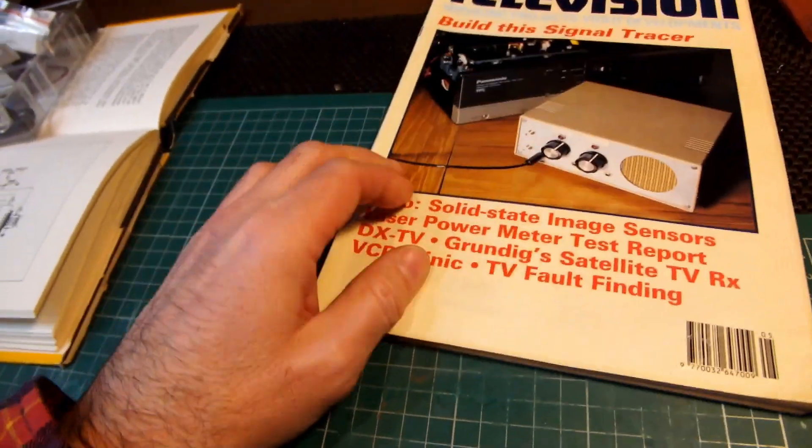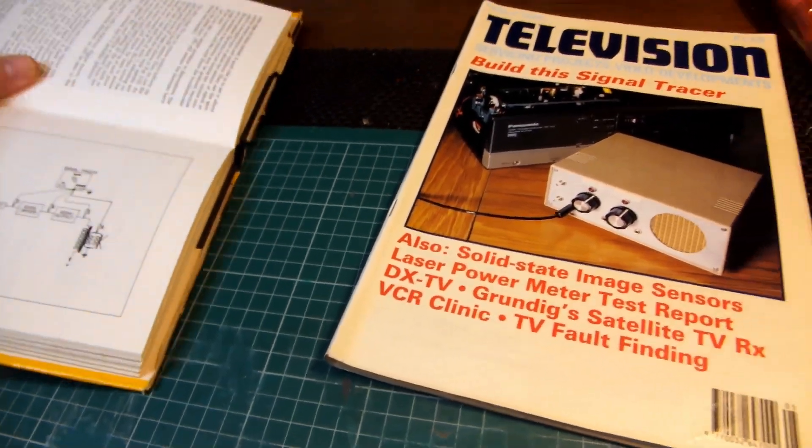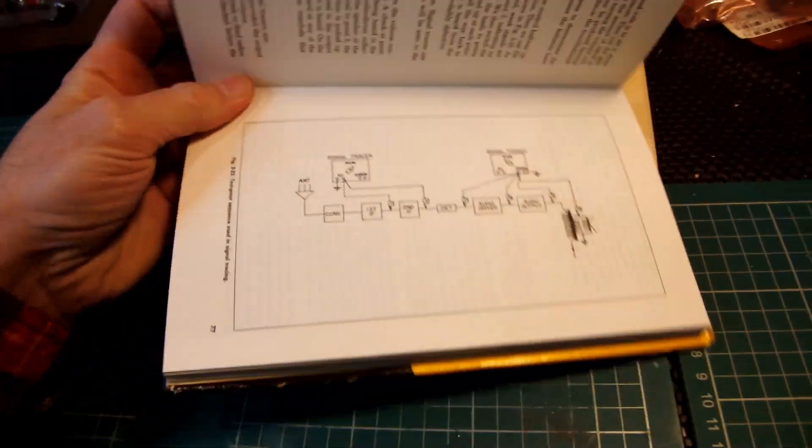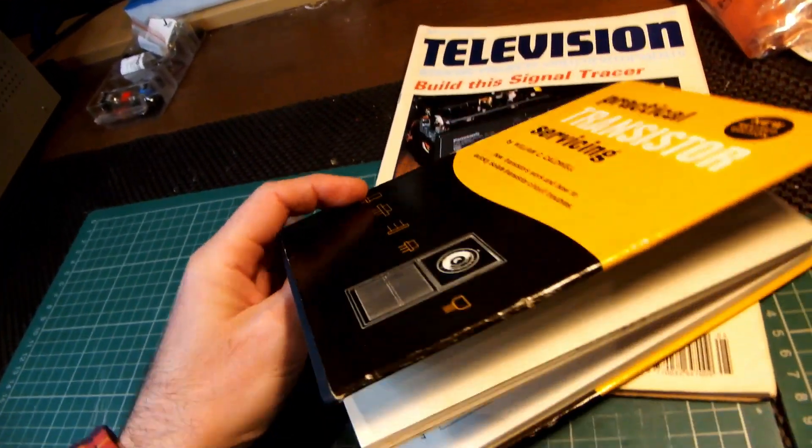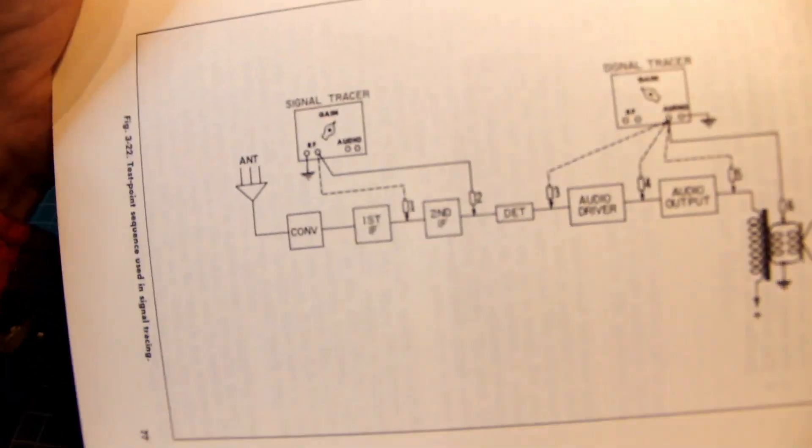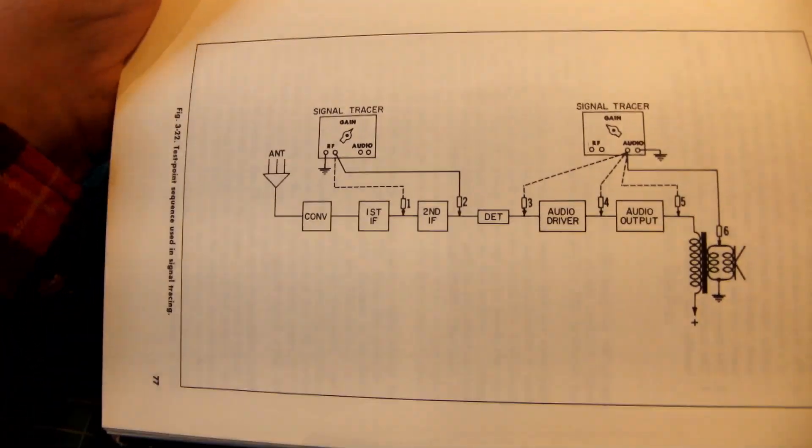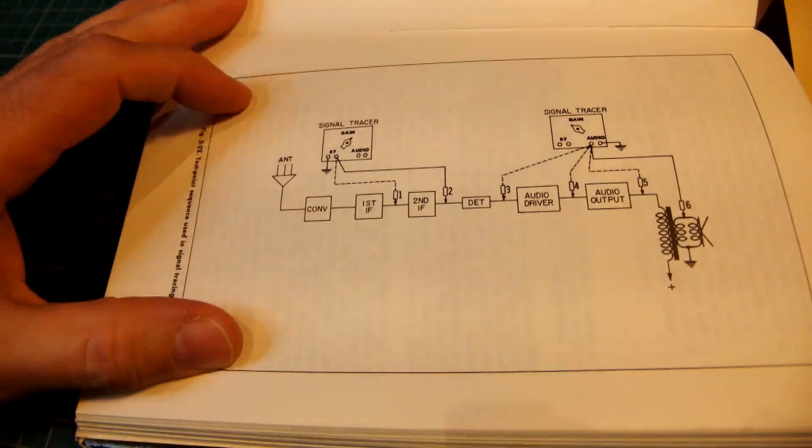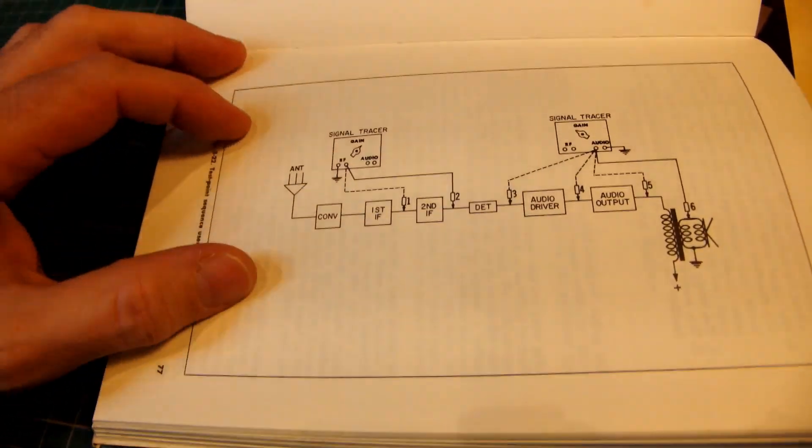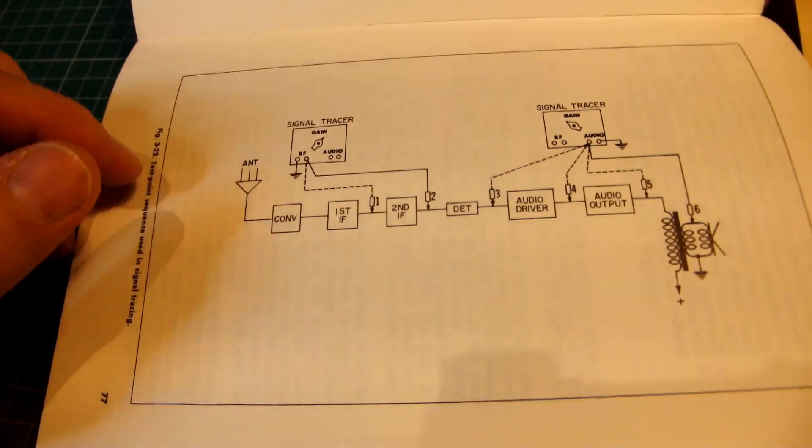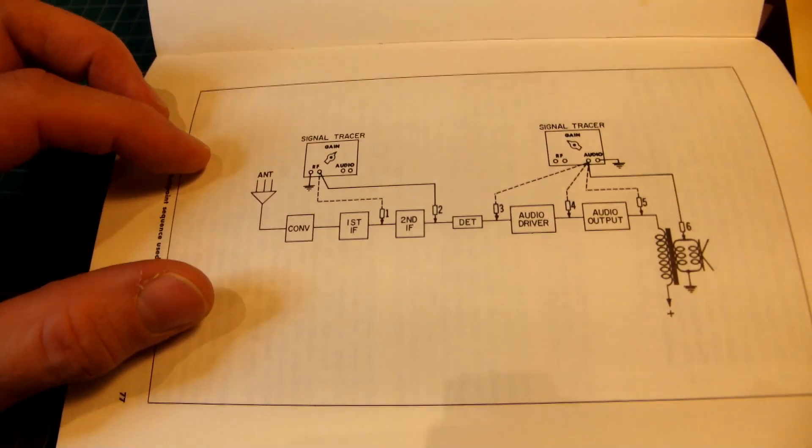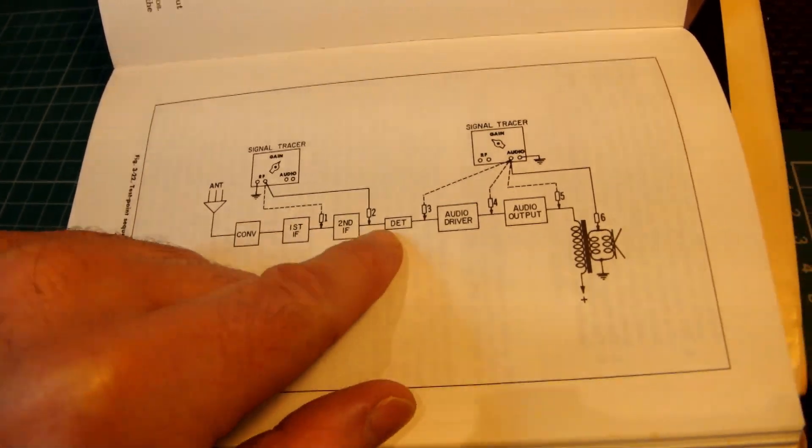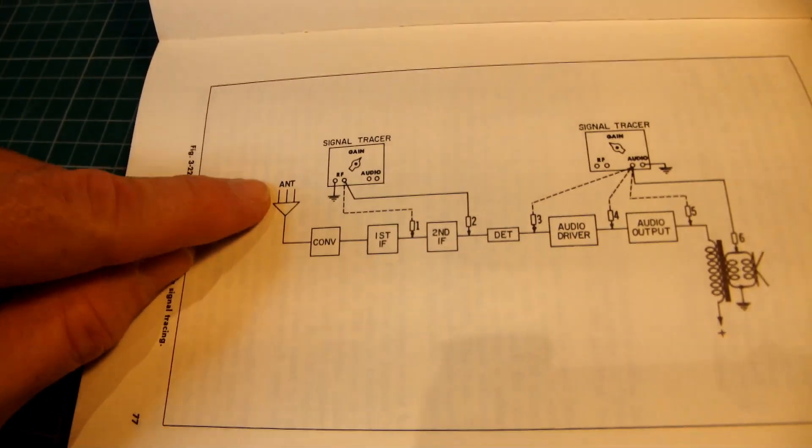As a quick summary, this is Practical Transistor Servicing by Caldwell from the 1960s. There's a very nice description here of a signal tracer and what it can do. Essentially, it's like an audio amplifier with a bit of RF demodulation or RF detection, and it lets you sample the audio chain of a radio.